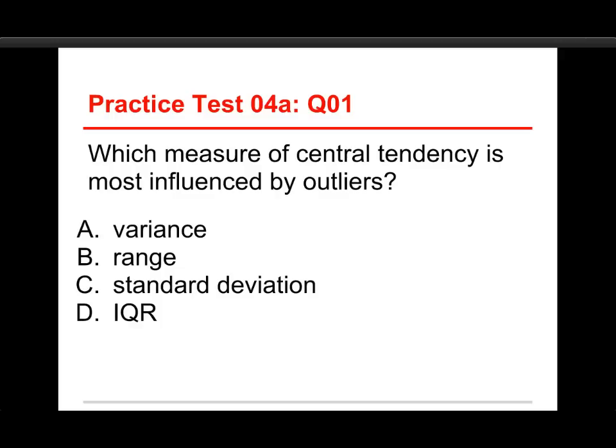The first question in this test is, which measure of central tendency is most influenced by outliers? The choices are the variance, range, standard deviation, or IQR, which is the interquartile range. The answer to this one is the range.